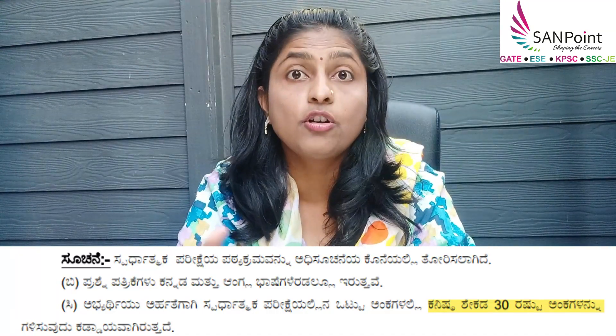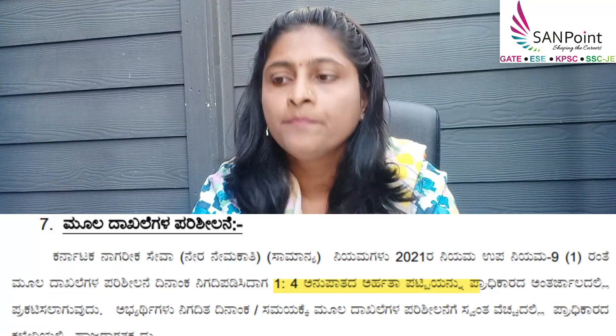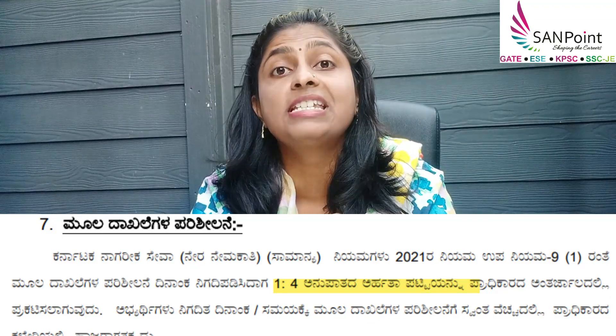The next question is: is there any minimum marks to get shortlisted? Yes, it is clearly mentioned — you need a minimum of 30% of the marks to get shortlisted. There are 100 marks in GS and 200 marks in technical, so altogether 300 marks. 300 into 0.3 equals 90 marks. So 90 out of 300 is the minimum marks to get shortlisted.